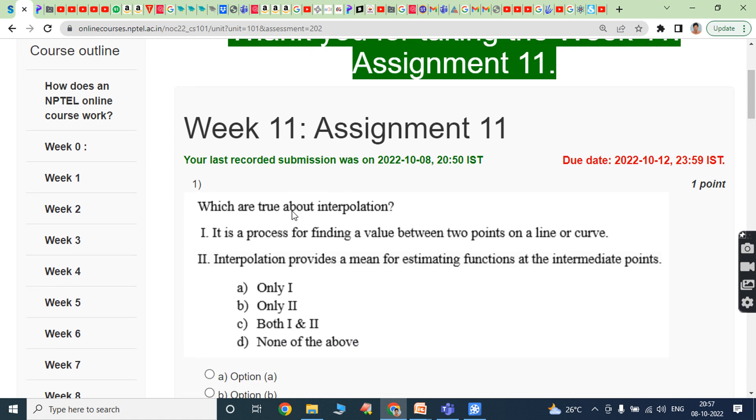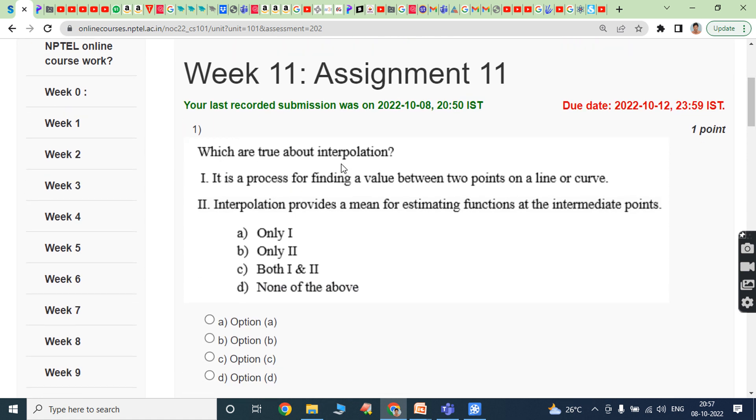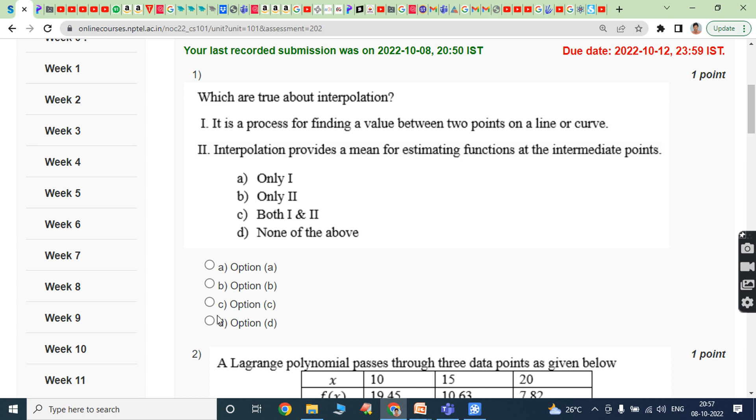The first question is which are true about interpolation? First, it is a process for finding a value between two points on a line or curve. Second, interpolation provides a means for estimating functions at intermediate points. Option A is only one, option B is only two, option C is both one and two, option D is none of the above. The answer is option C.